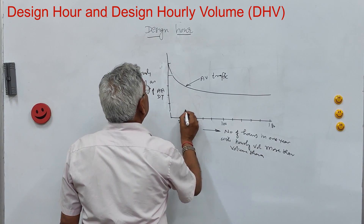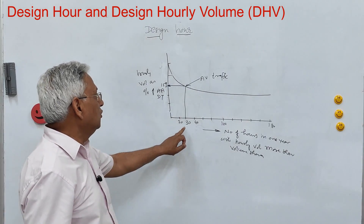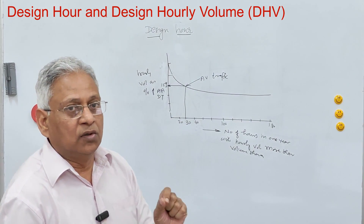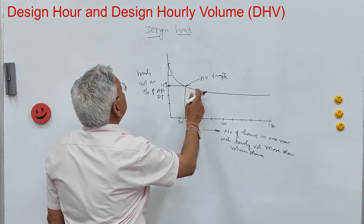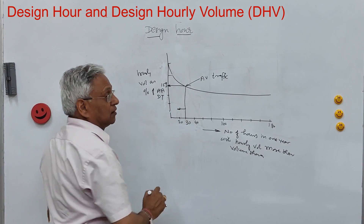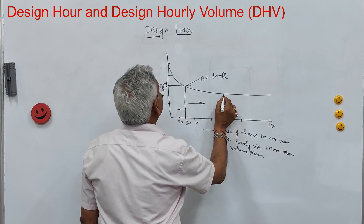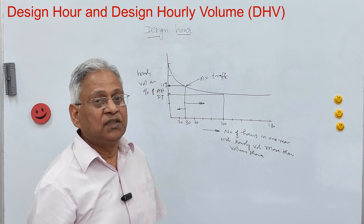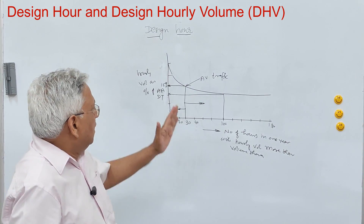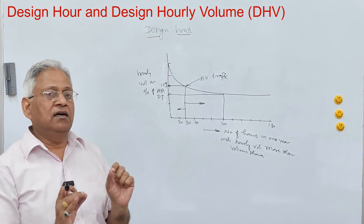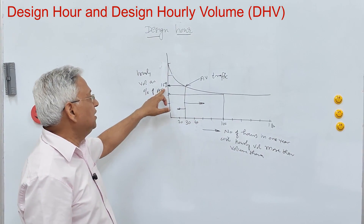Corresponding to 30 hours, the value is around 15%. That means the 30th hourly volume on the road is 15% of AADT. In the majority of cases, this variation curve is very steep on the left side of the 30th hourly volume, and then it becomes very flat on the right side. The 30th hourly volume indicates there will be 29 hours in a year, randomly distributed, when the actual traffic on the road will be more than 15% of AADT.